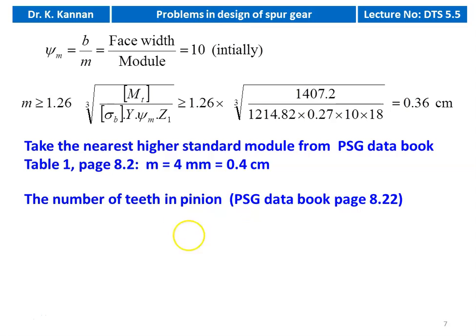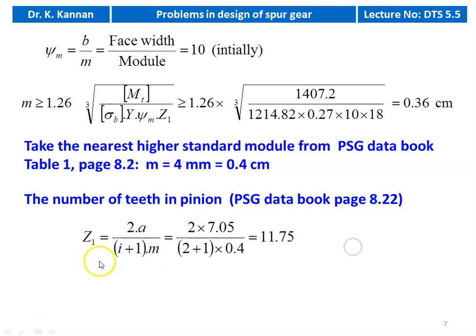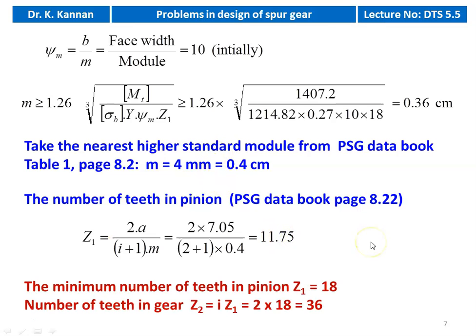Number of teeth on the pinion: from PSG Data Book page 8.22, Z1 = 2A / [(i + 1) × m] = 2 × 7.05 / [(2 + 1) × 0.4] = 11.75. Since minimum teeth on pinion is 18, we take Z1 = 18, and number of teeth on gear Z2 = i × Z1 = 2 × 18 = 36.